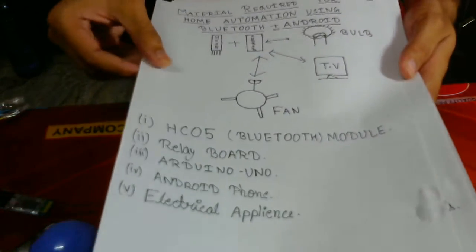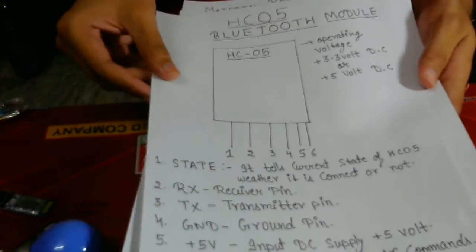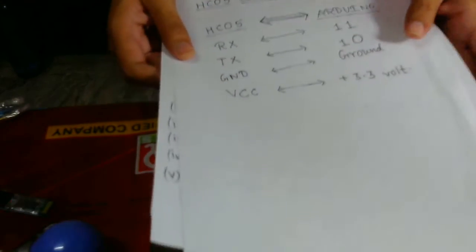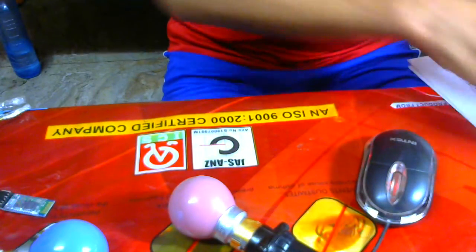The theory will remain the same as in the previous lecture. I already told you about the Bluetooth module HC-05 and about the relay board — all will be the same. The circuit diagram and the connection of HC-05 with the Arduino are all the same. The difference is just in the programming.